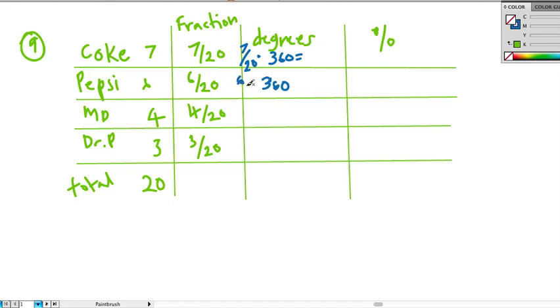For the next one, we'd have 6 over 20, which is the fraction, and we times it by 360. The next one is 4 out of 20, which could be simplified to 1 fifth, and we times it by 360. We're using 360 because that's the total number of degrees that are in a circle. The final one is 3 out of 20, and we would times it by 360.